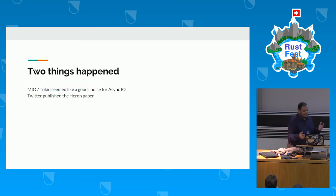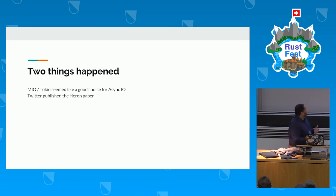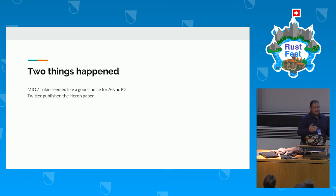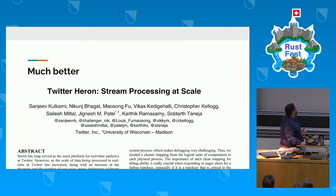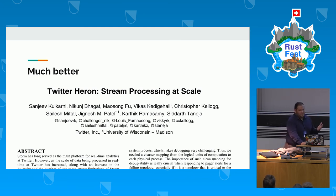Two things happened: we thought maybe we could rewrite Apache Storm or find a better alternative. At that time, Twitter published a research paper called Twitter Heron. We also noticed from Storm's error messages that Storm uses Netty for asynchronous networking. We watched the Mio talk at the first RustConf and thought: if Rust has asynchronous networking, maybe we could rewrite a stream processing engine in Rust. The Heron paper addresses all the problems that Storm has, and we thought we would use it as a guiding principle for designing our system.